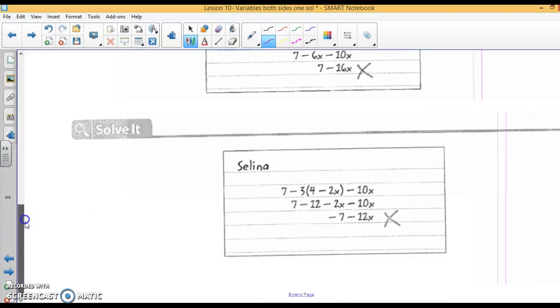This person distributed first. But negative 3 times 4 is negative 12. Negative 3 times negative 2 should be positive 6x. So there's her mistake.